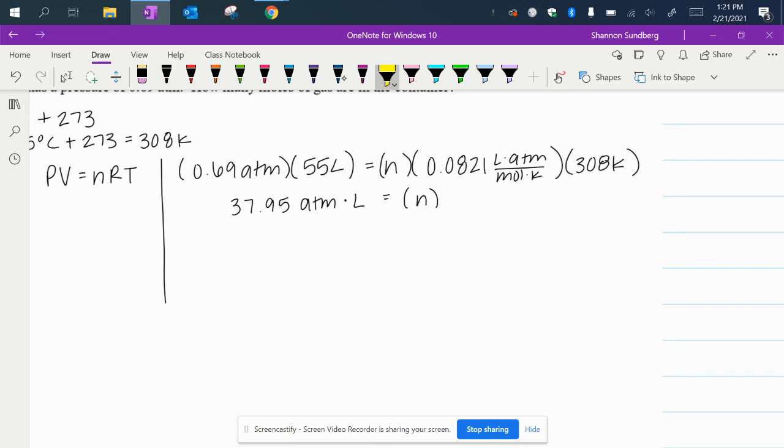I'm going to highlight it so you focus on not losing it. And then 0.0821 times 308 Kelvin is going to get me 25.287. And when you multiply two things together you're going to lose these units, the Kelvin units, but I still have the remainder. So liters times atmospheres over moles.